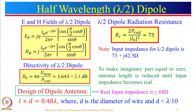For the lambda by 2 dipole, the input impedance is 73 + j42.5 ohm. The imaginary part represents an inductive component, so this is not at perfect resonance. At resonance, input impedance should be purely real. To make the imaginary part zero, we reduce the antenna length slightly, which gives a real input impedance of around 68 ohm.